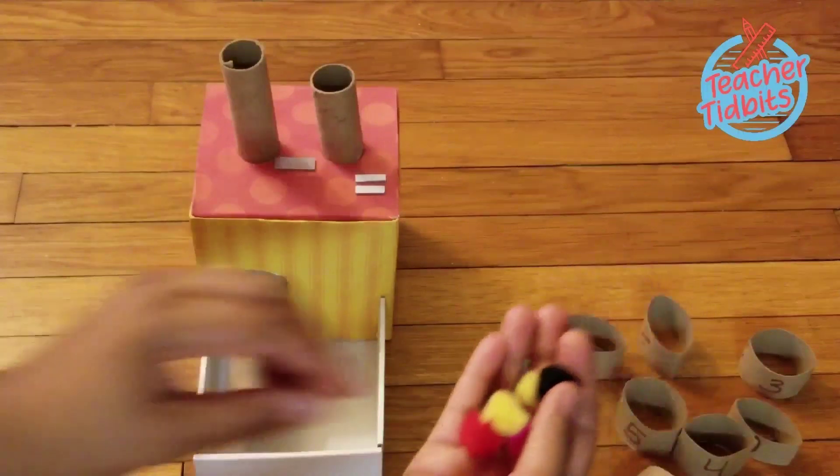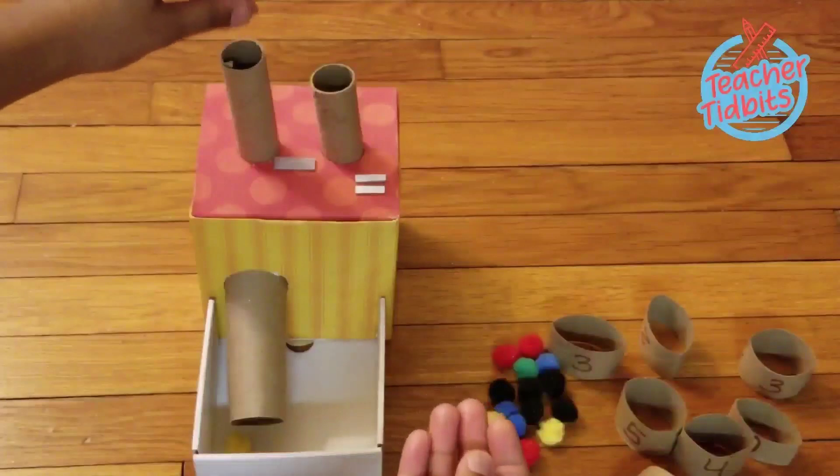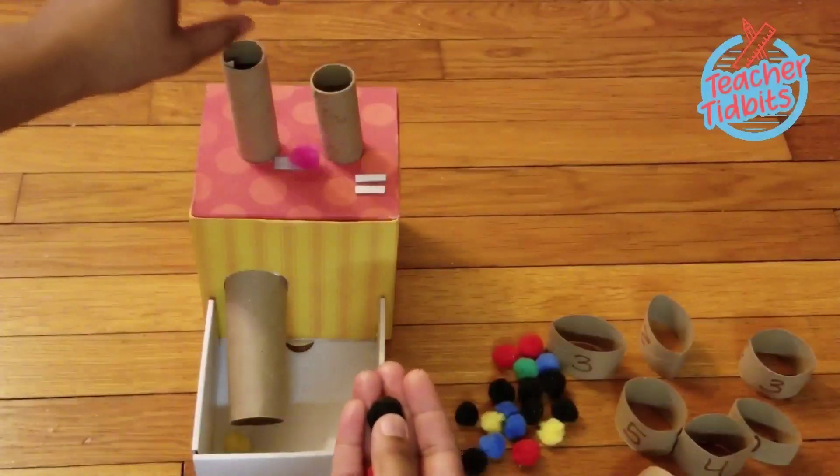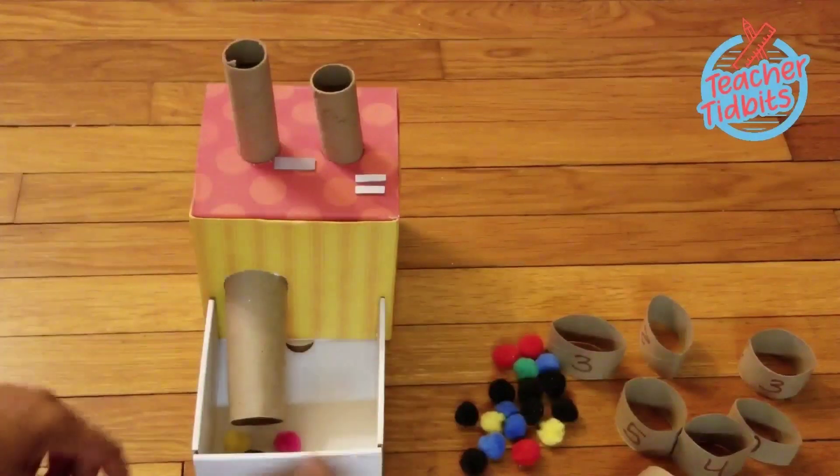So for this subtraction box, it's a lot more interactive. Your child is going to simply take some pom poms, just grab as many as they want, place them down the ramp, and then they're going to count how many came down.